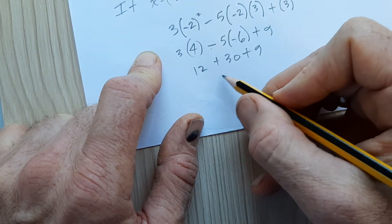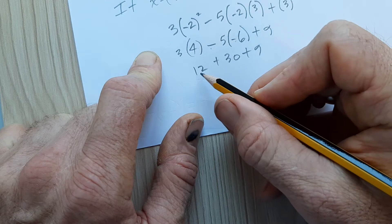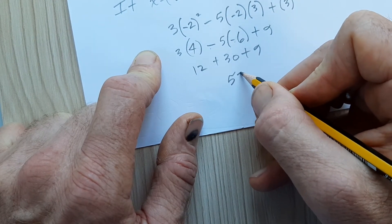Plus 9. Minus times minus is plus. And we're going to have 42, 51.